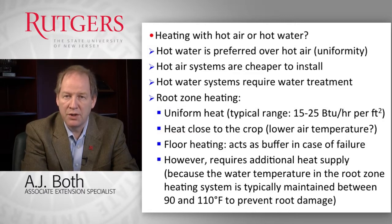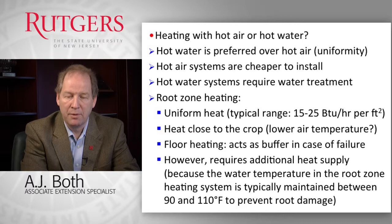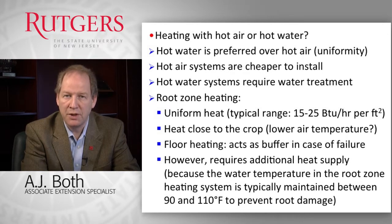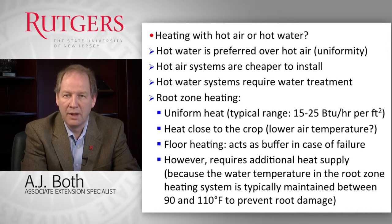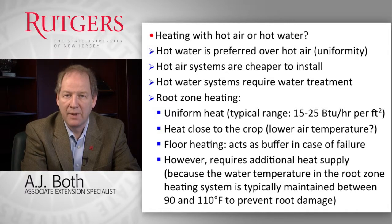If you have a root zone heating system — either pipes embedded in the floor or pipes directly on the bench — that is probably the best system for distributing heat uniformly. However, we can only provide so much heat because plants are grown on the floor or bench, and if temperatures get too high, plants will be negatively affected. So a root zone system provides a base load of heating, and additional capacity must come from overhead pipes or unit heaters.